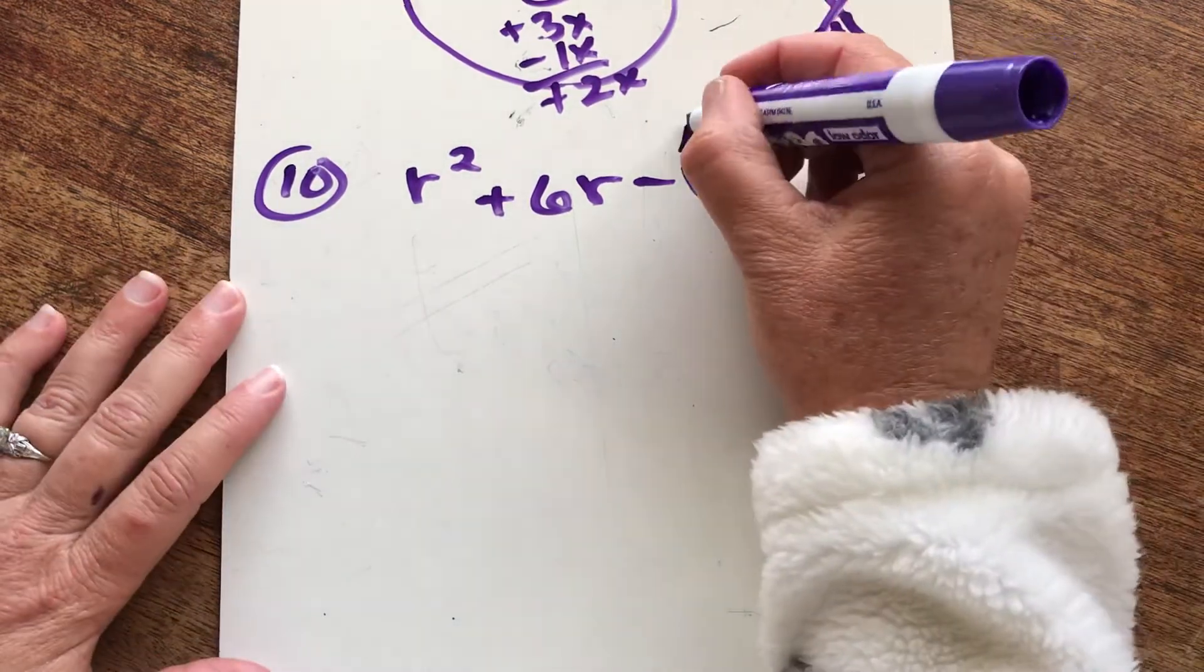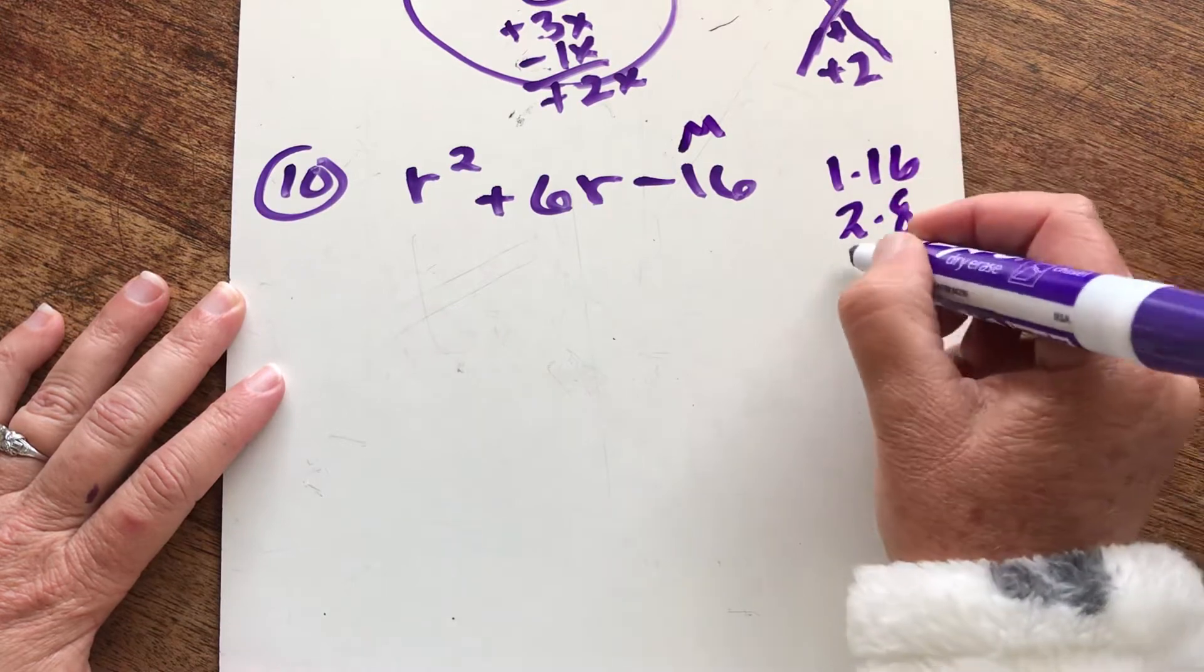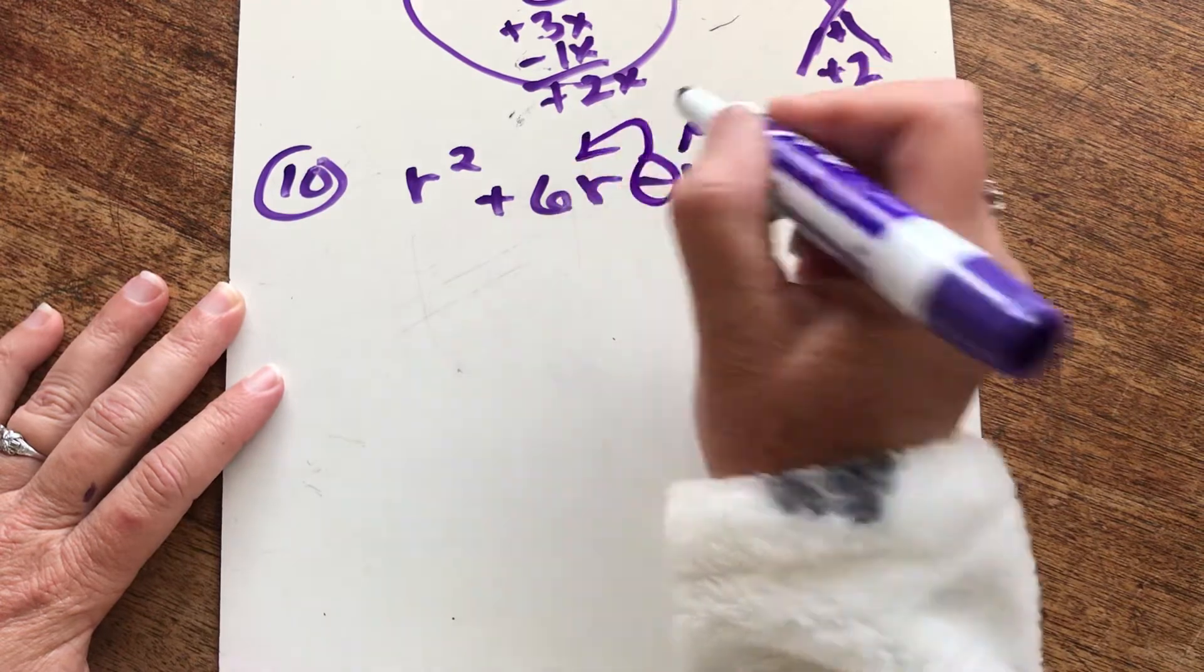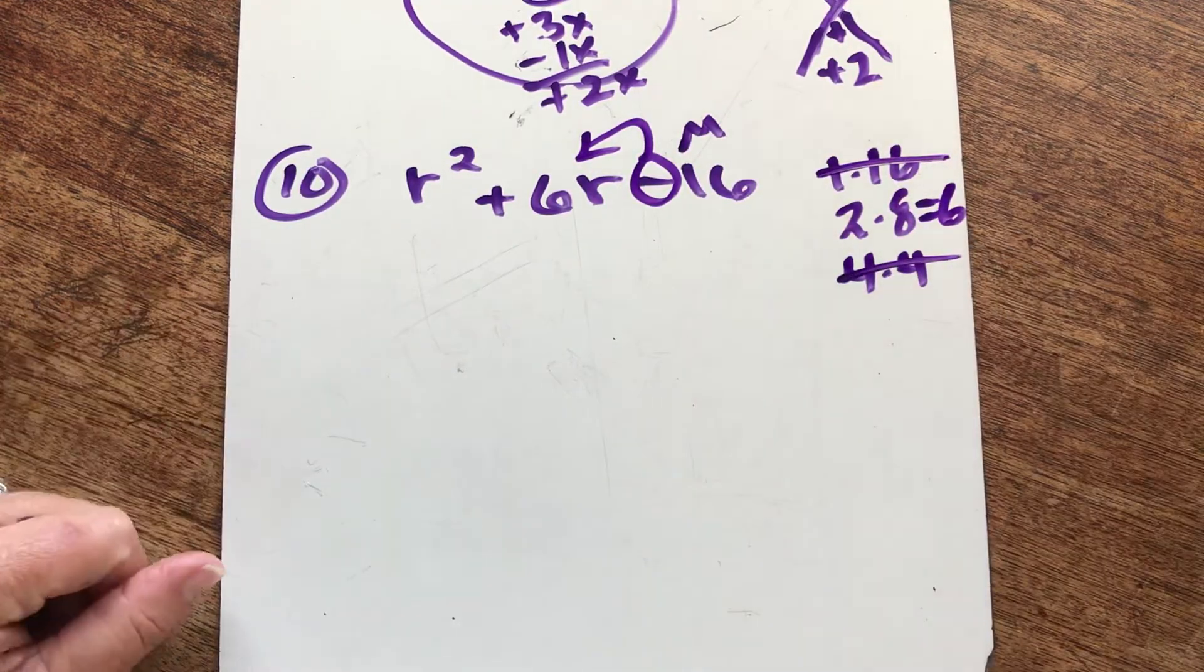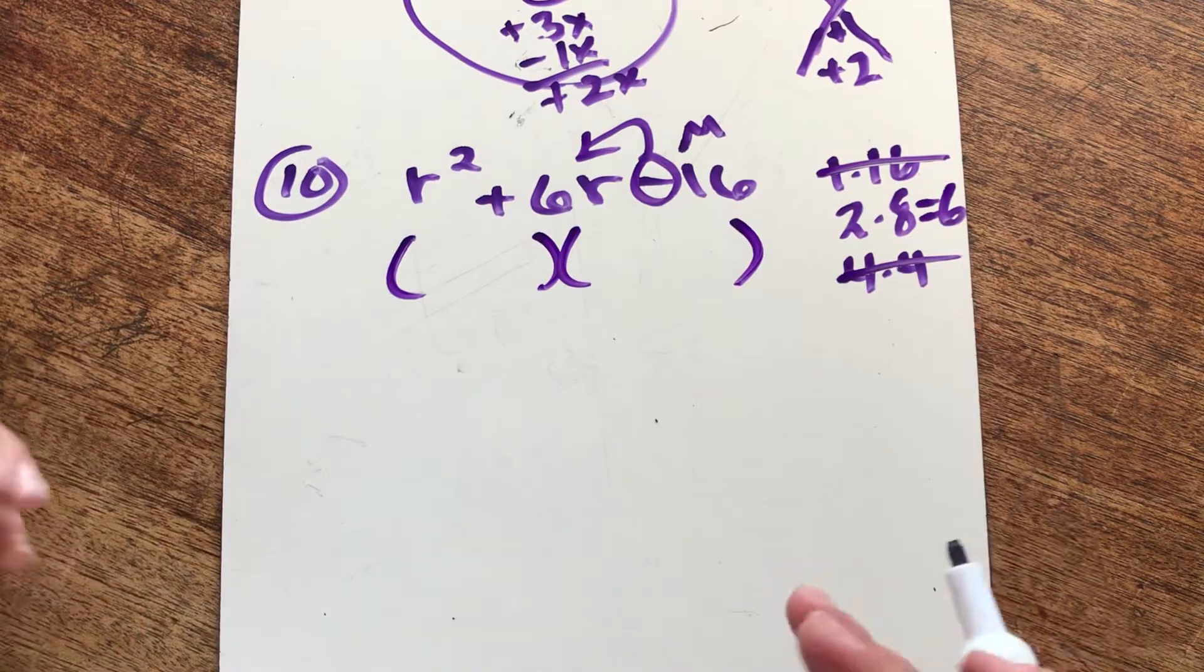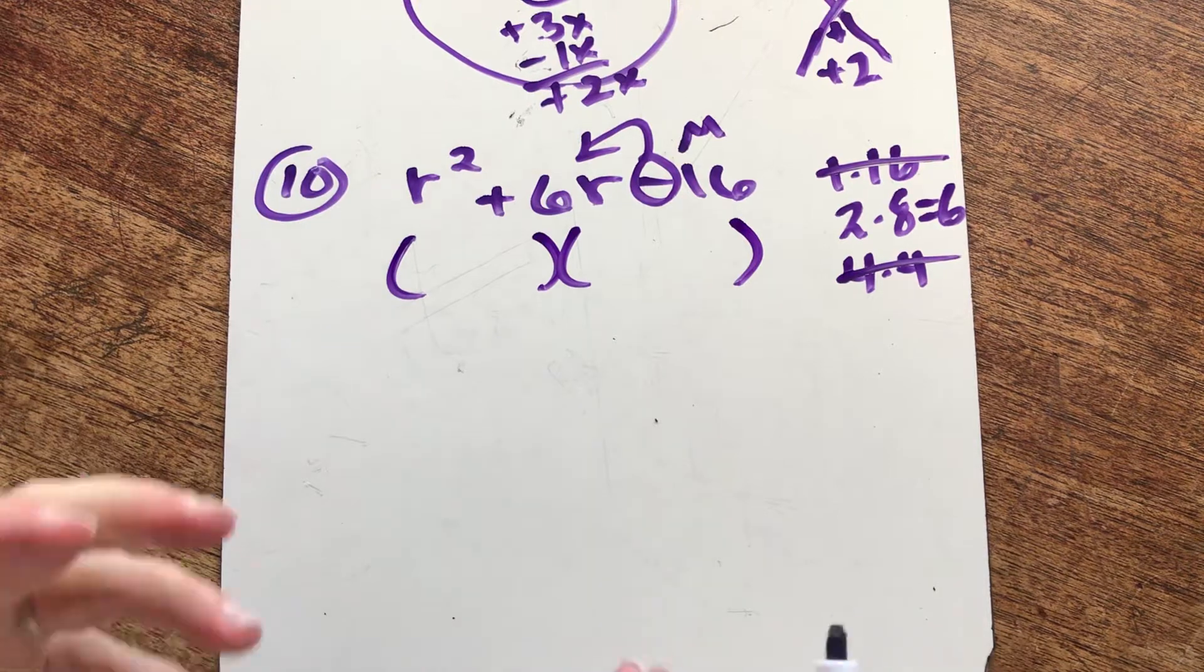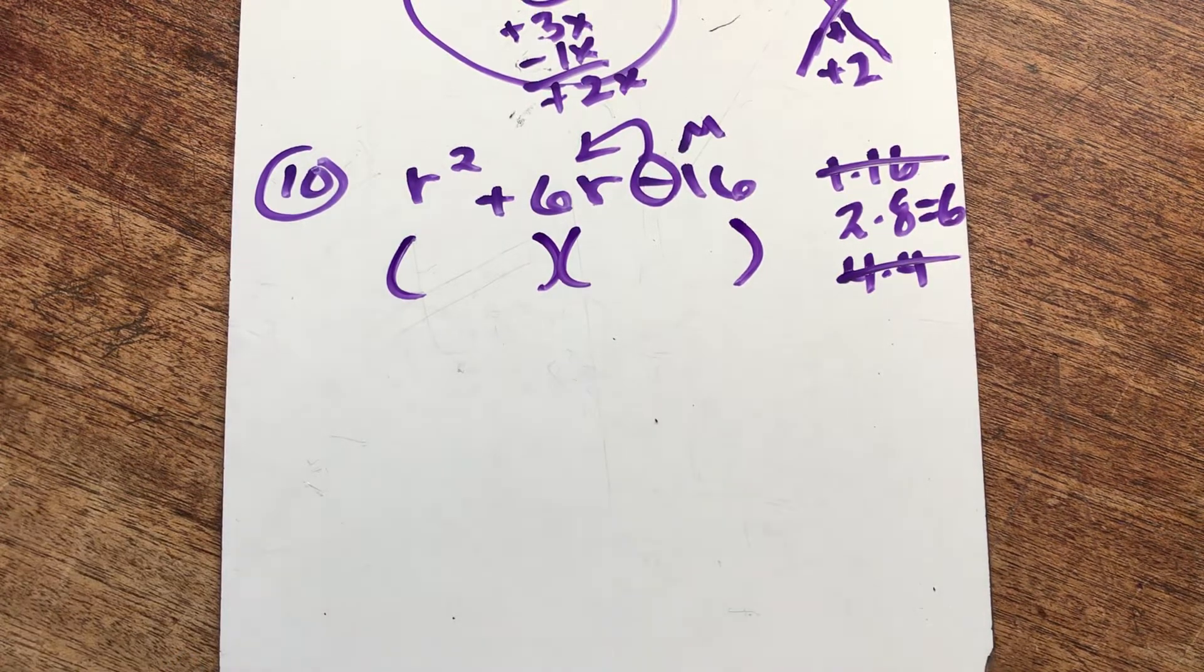So I'm listing all the factors of 16. 1 and 16. We have 2 and 8. We have 4 and 4. I want to know which two numbers subtract to give me 6. Well, it has to be 2 and 8. They do subtract to give me 6. And I want a positive 6. So if I subtract and I have positive left over, I must have started with more positives. Let me say that one more time. If I subtract and get a positive answer, well, I must have started with more positives in the beginning. So here we go.